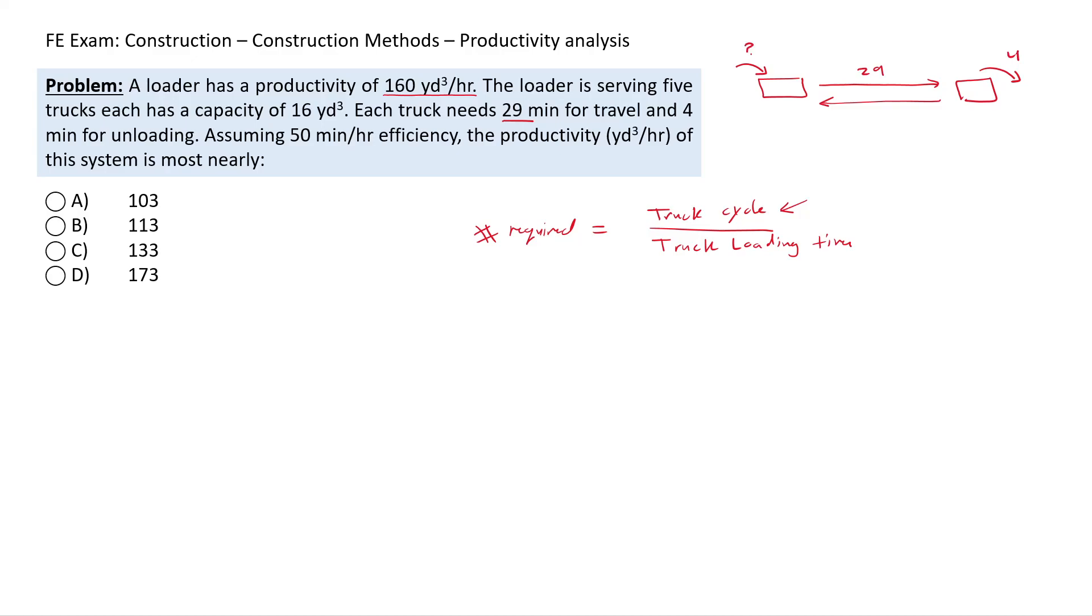But we know how much our loader produces. Then the loading time equals to the truck capacity, which is 16 cubic yards, divided by the loader production, which is 160 cubic yards per hour, which is 0.1 hour.